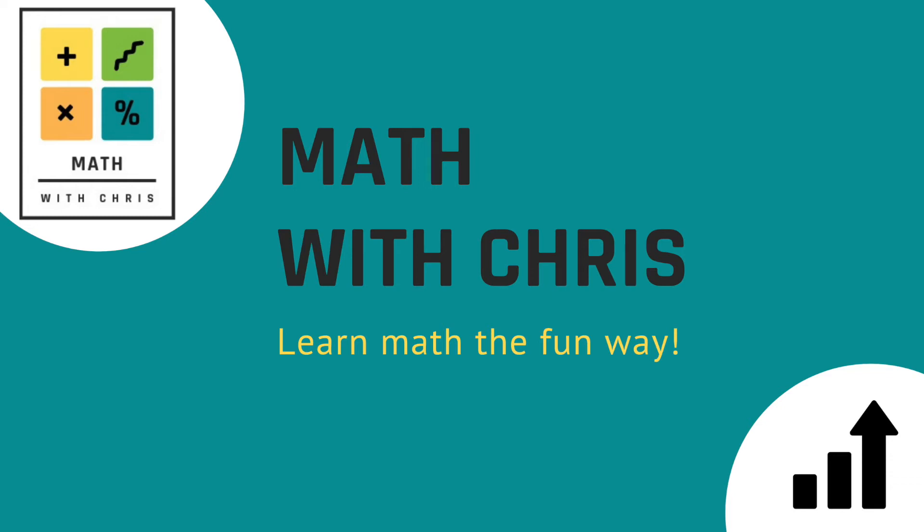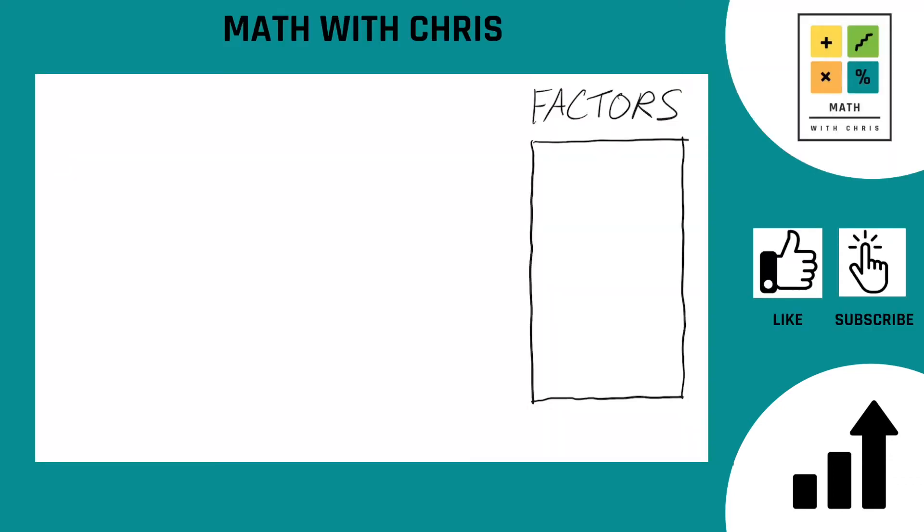Welcome everyone, Math with Chris. Let's take a look at the number 72. We're going to find the factors of 72 using a factor tree. 72 has a bunch, so there's going to be quite a few steps here.